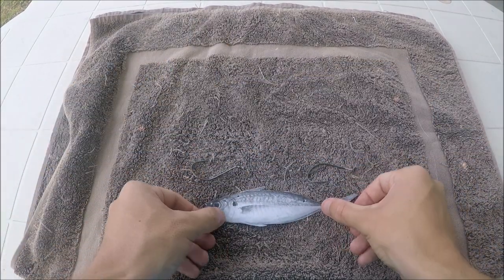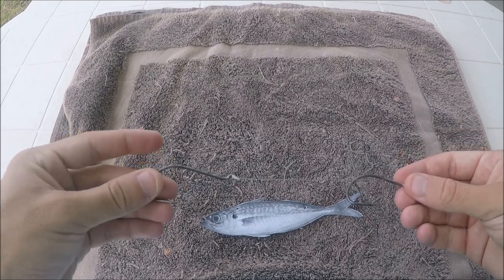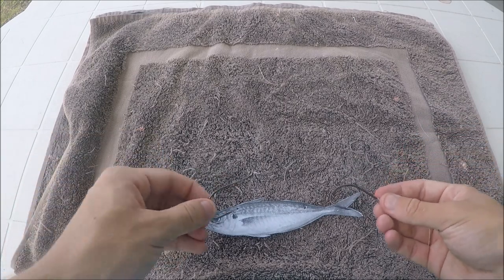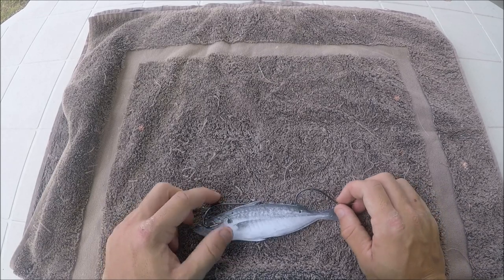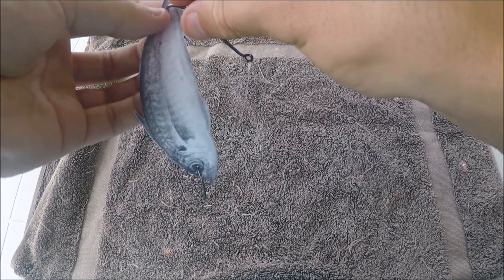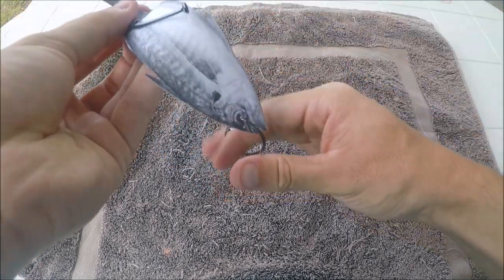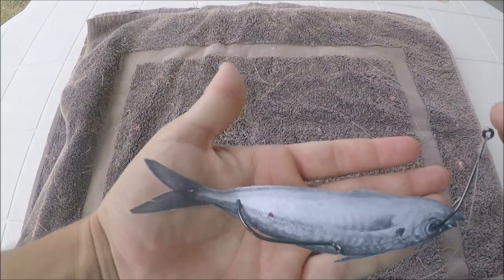Now obviously like I said you can rig dead baits on this. So for example if this was a pilchard or even a yakka a big dead yakka. So there's a couple of ways you can do it. You can do it head first. You can have those sitting in there like that. So that's how you can rig a dead bait on it.